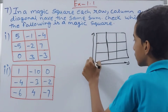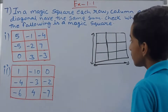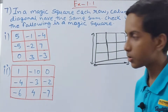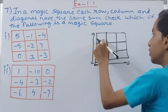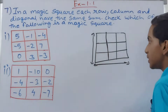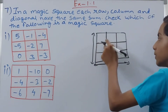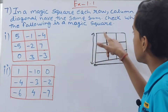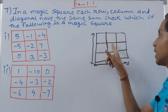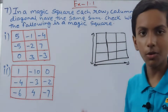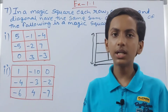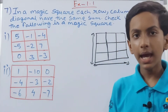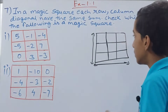The second condition is the column. Columns go vertically. You add the three numbers in each column, and all three columns should give the same sum. For example, if you add each column and get 10 each time — first column gives 10, second gives 10, third gives 10 — the column condition is satisfied.